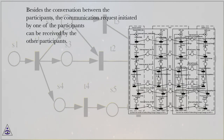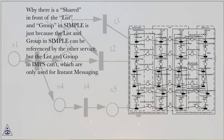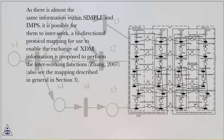Group is a set of users, which is the same feature in Simple and IMP-S, and the participant can see the other participants in the same group. The group participant can have a group conversation — instant message conversation or voice conversation — through the group information. Besides the conversation between participants, the communication request initiated by one participant can be received by the others. The list and group in Simple can be referenced by other services, but the list and group in IMP-S cannot, which are only used for instant messaging.